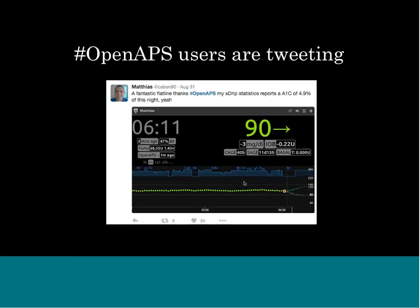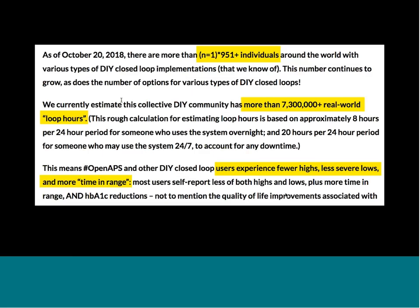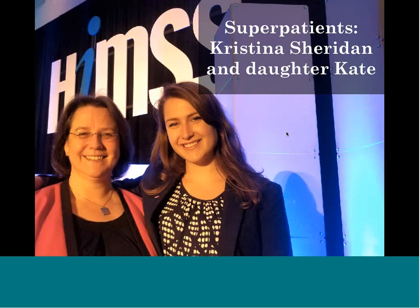They ended up with code running on a $35 pocket computer that connects her CGM with her insulin pump for an automated artificial pancreas — DIYPS, a do-it-yourself pancreas system. It's open source software — like building your own home radio. People using this have better-controlled blood sugar than people with a working pancreas. As of about a month ago, almost 1,000 people are using this, having logged more than 7 million hours.